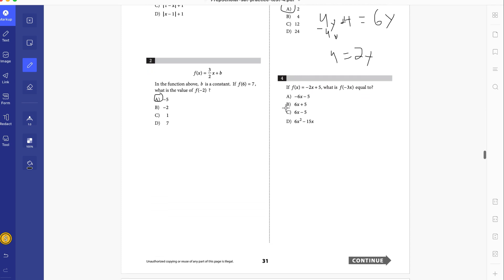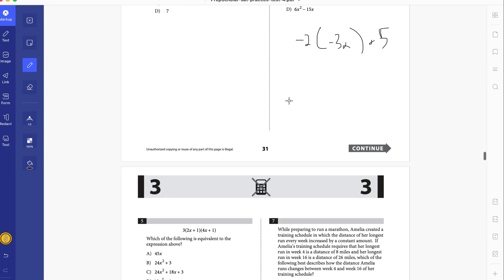So this one is plugging in negative 3x. We have negative 2 times negative 3x plus 5. This becomes 6x plus 5. Super simple, guys. Not hard work.